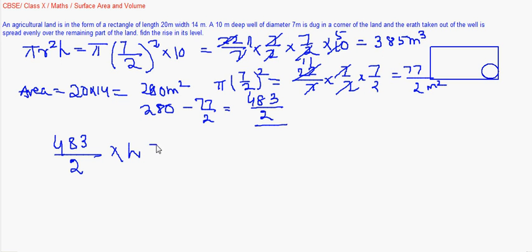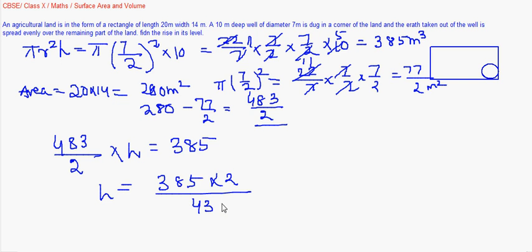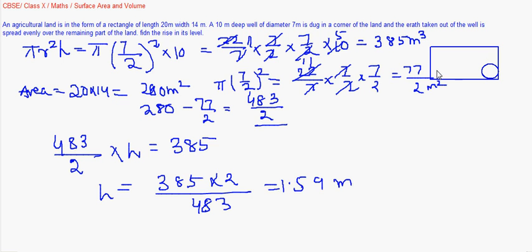This area multiplied by the height gives the volume of that raised area, and it should equal the volume of the dug earth. So h becomes 385 times 2 by 483, which gives approximately 1.59 meters. That is the rise in level due to the earth being placed on the rest of the area.